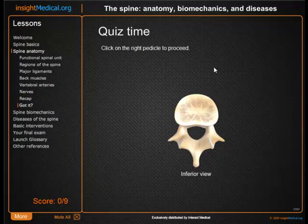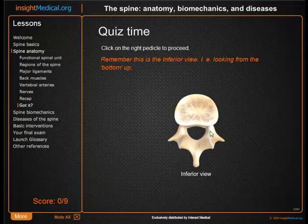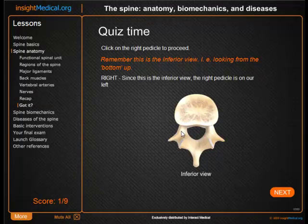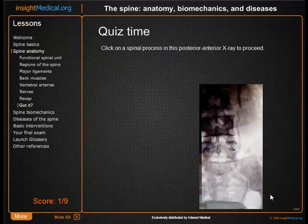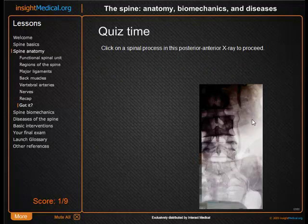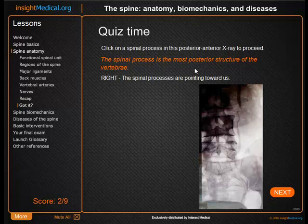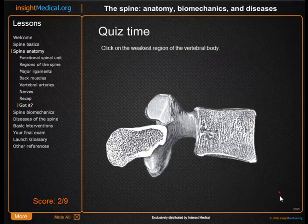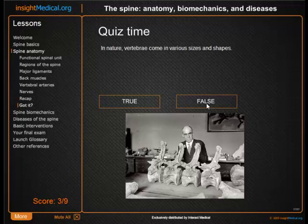So if we click on the right pedicle — we made a mistake, so we get a little clue and we click on the correct location. And then we go on to the next question, the spinal process — there's the spinal process. And we go on this way until we get through the entire course.